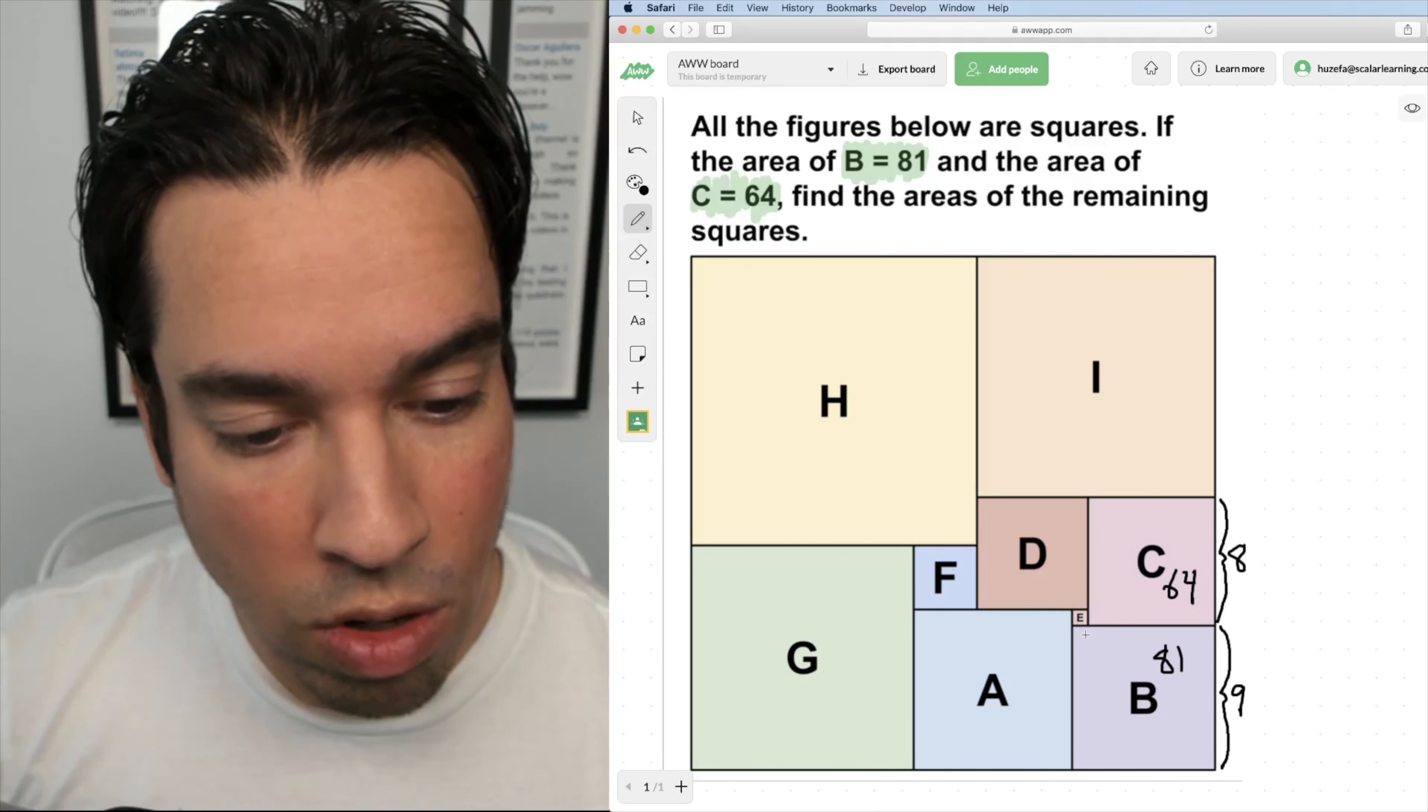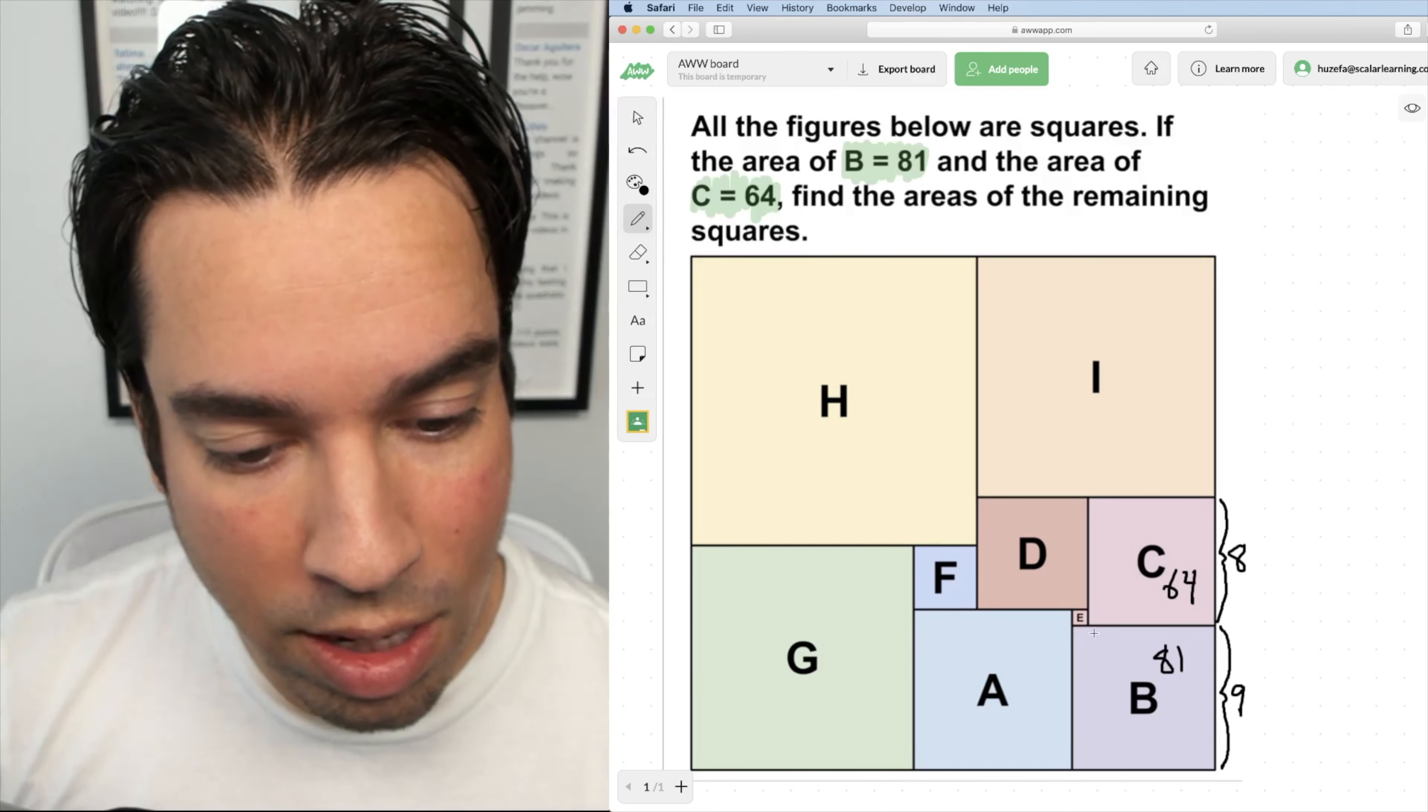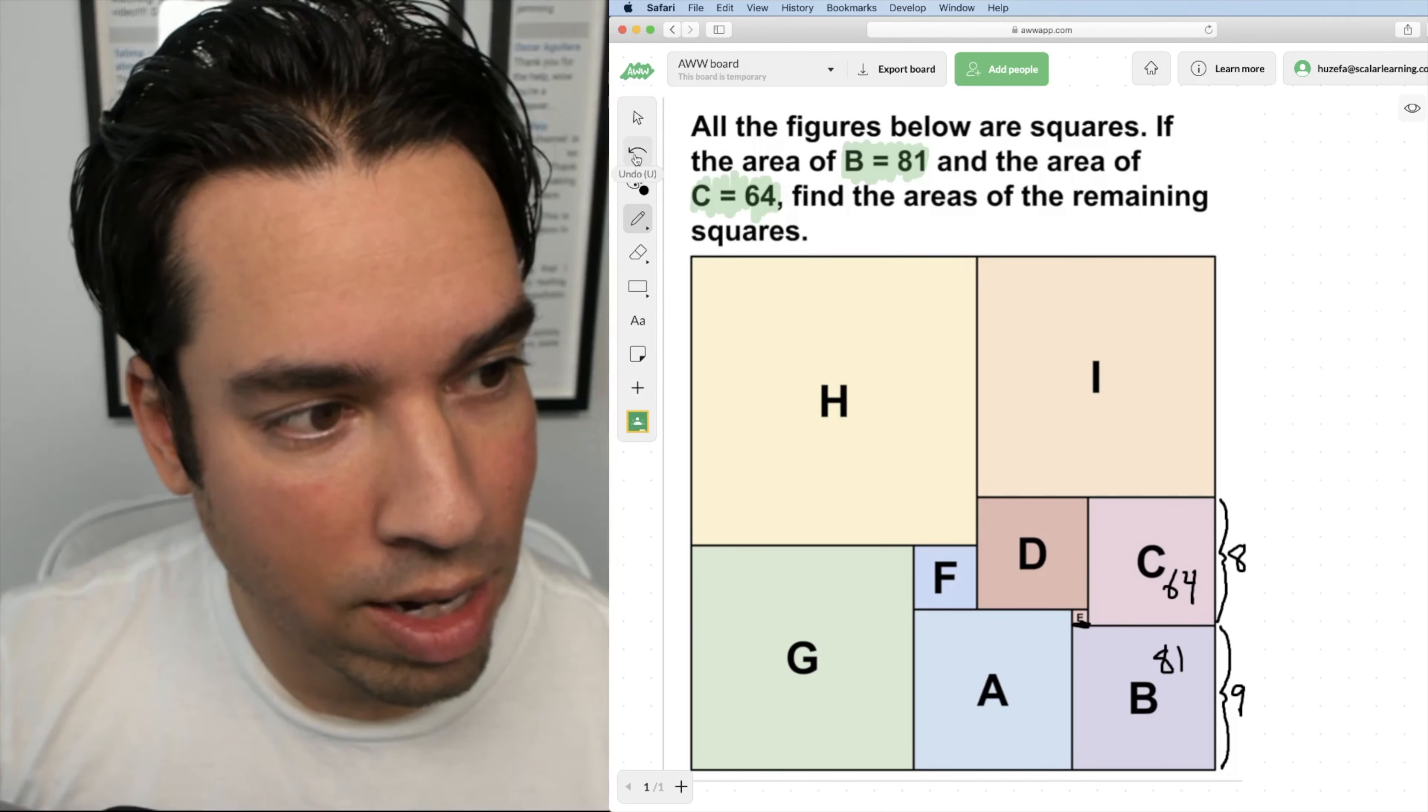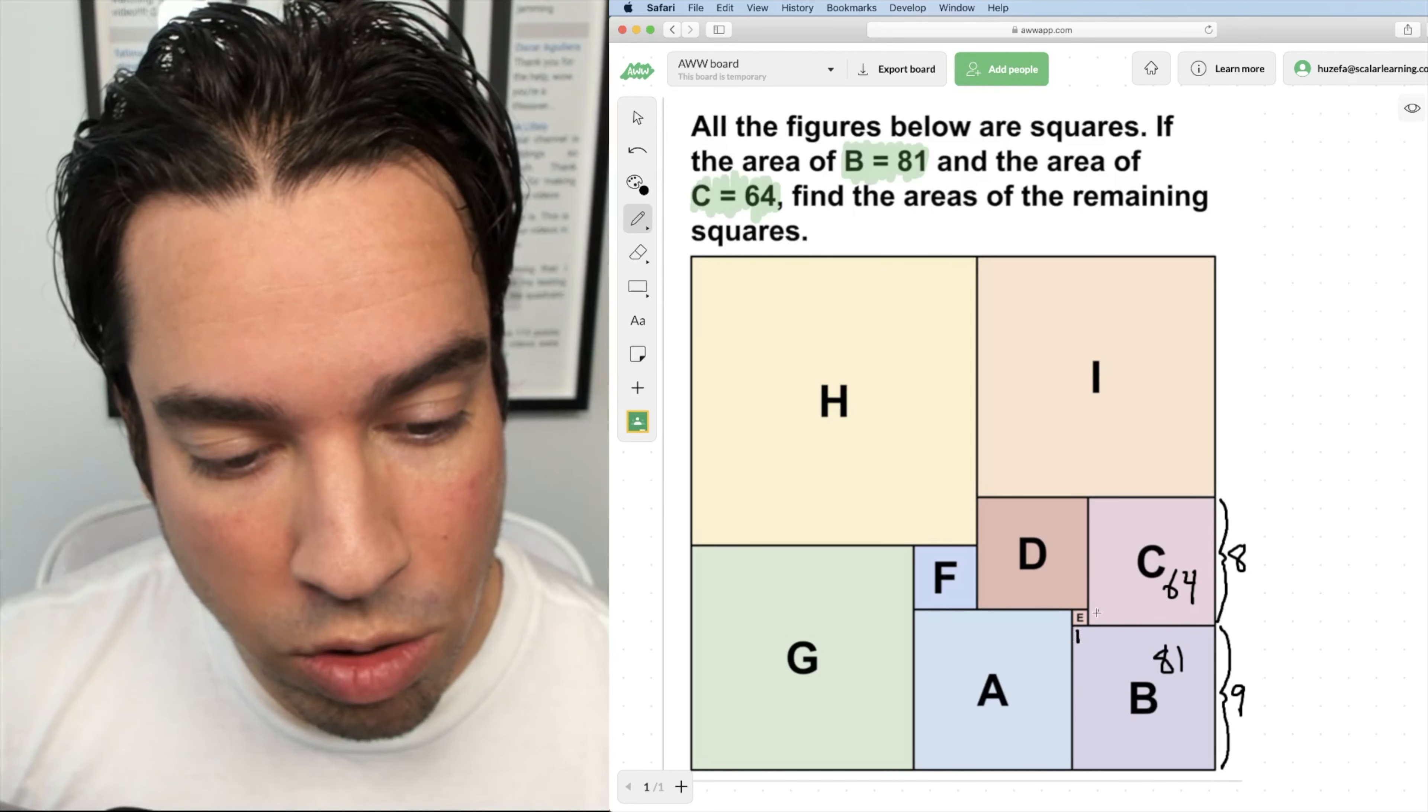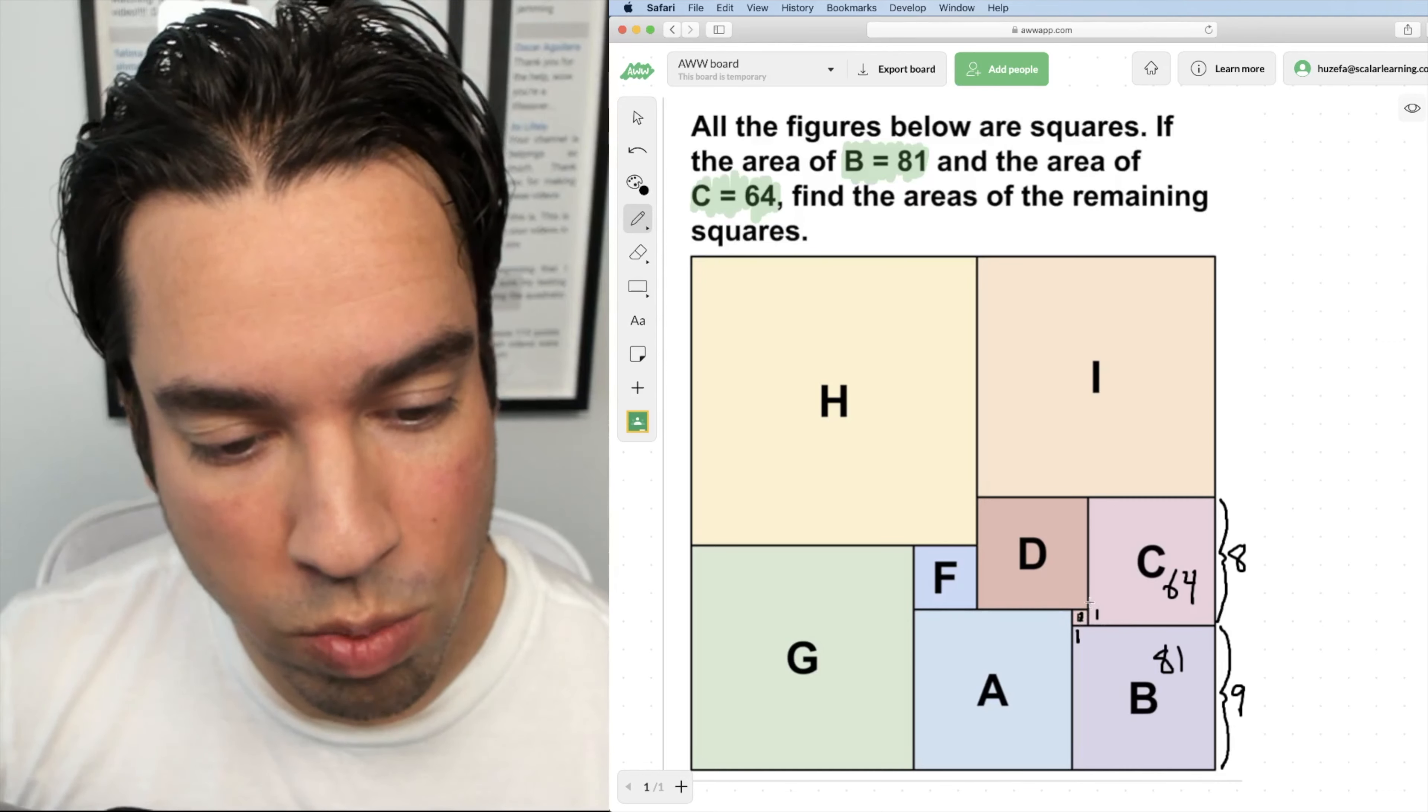Now, we also notice that according to this diagram, we can see that this side length is just this amount longer than C, right? And since we know that B is longer than C by one, I know that E must be a one by one. So the area of E, I'm just going to throw a one on top of it, is one. One times one is one.